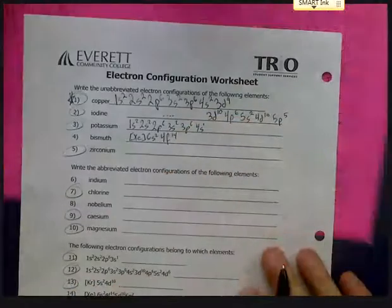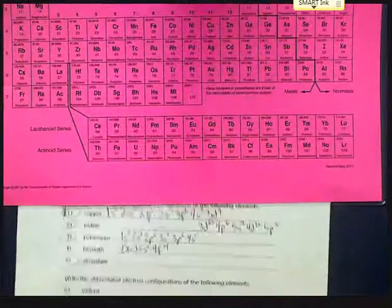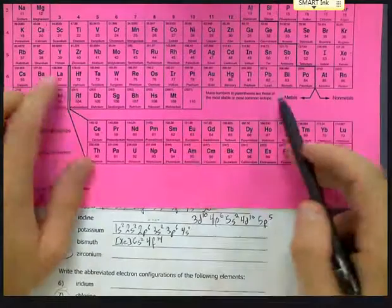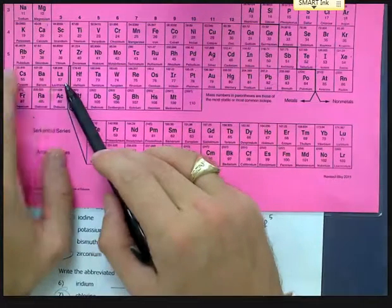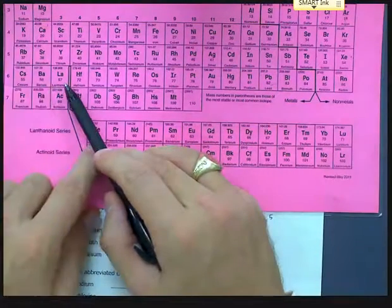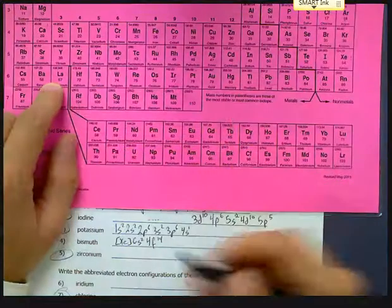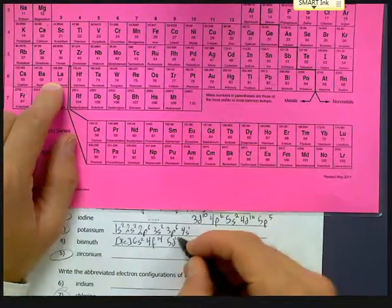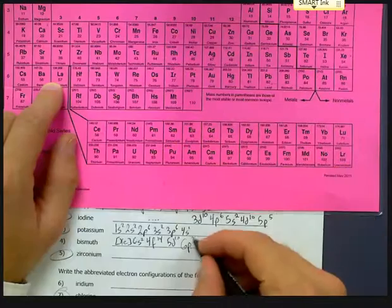Next, we just need to get our way all the way up to bismuth here. After the 4f, we're back into the d block. Remember, 6s, 4f, and then 5d. All 10 of the 5d, and then we have three at the 6p, so 6p3.